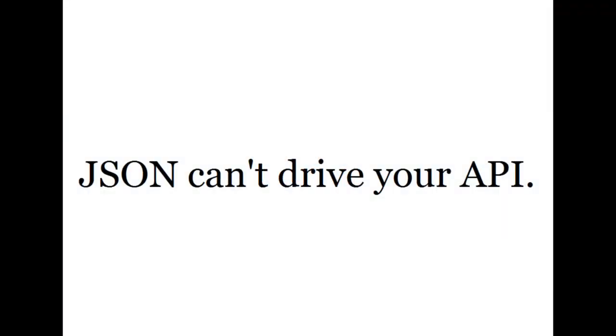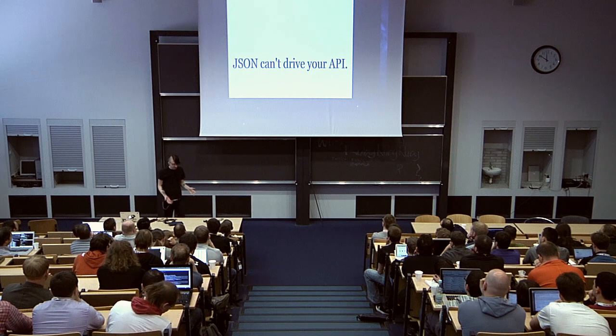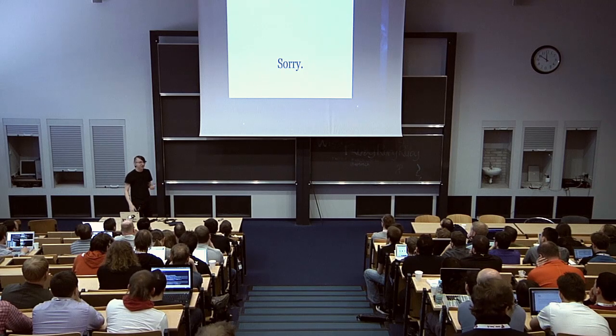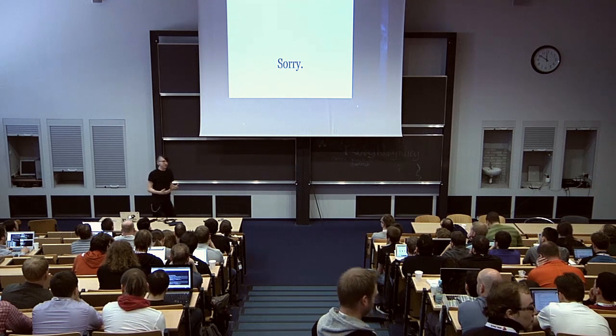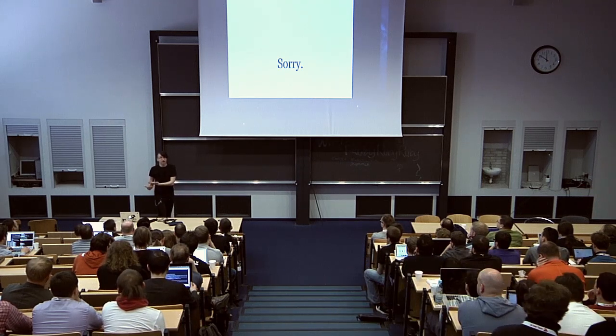We need to evaluate our media type needs. Unfortunately, JSON cannot drive your API. This is one of the things about media types. The media type has to be a hypermedia type. Can anyone tell me the canonical way to make a link in JSON? You can't. There isn't one.